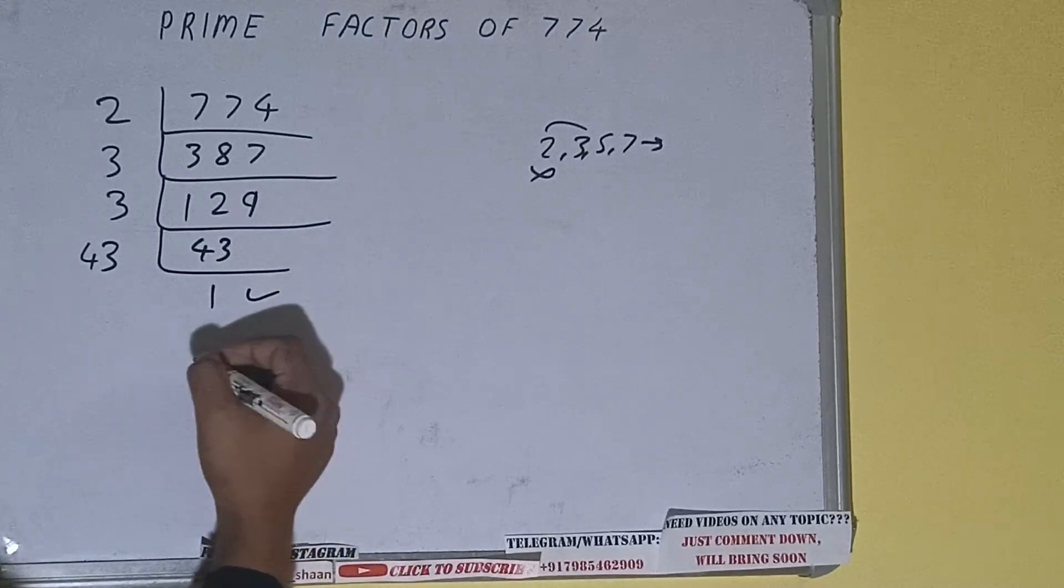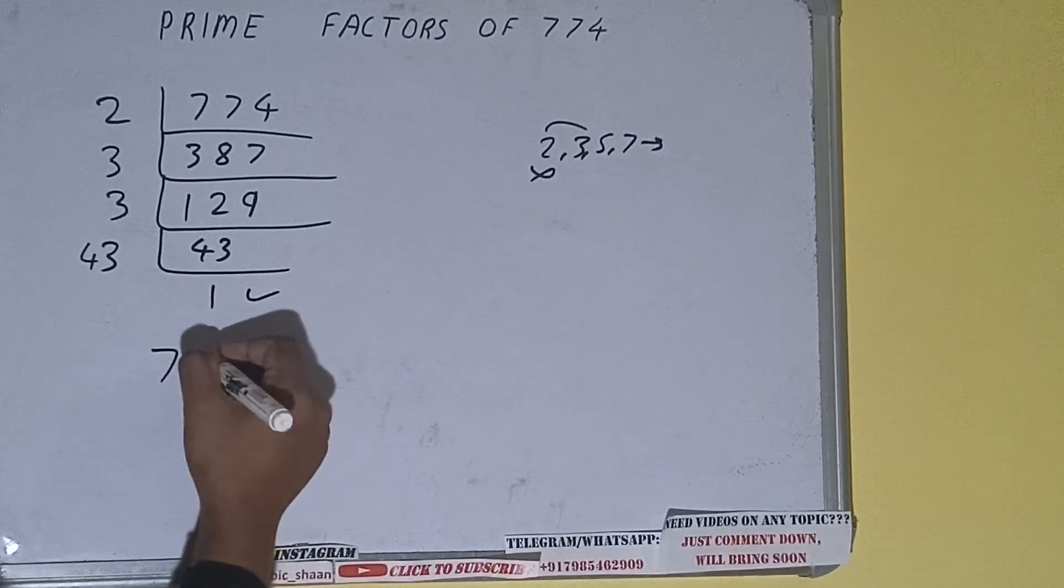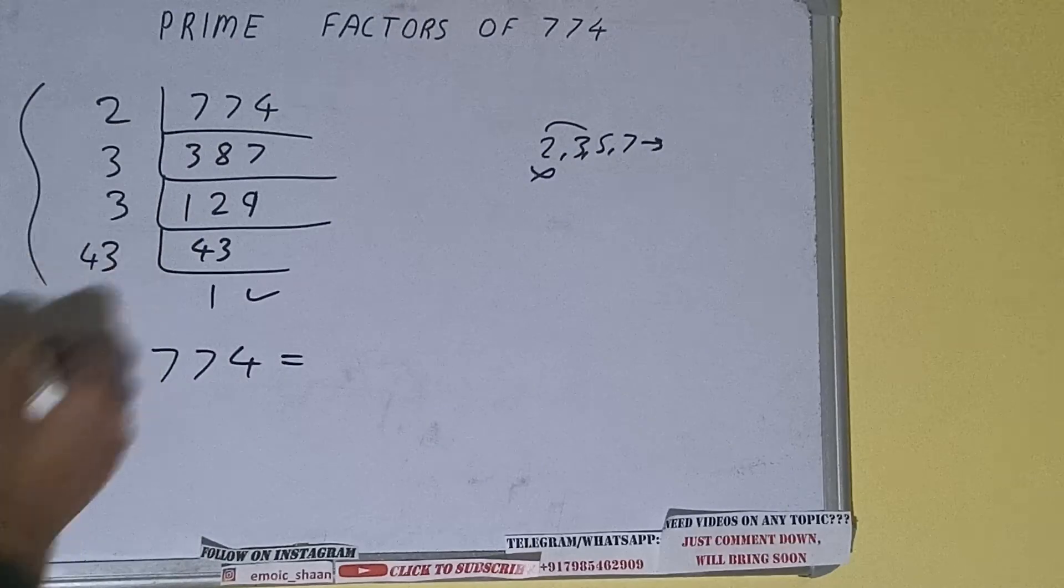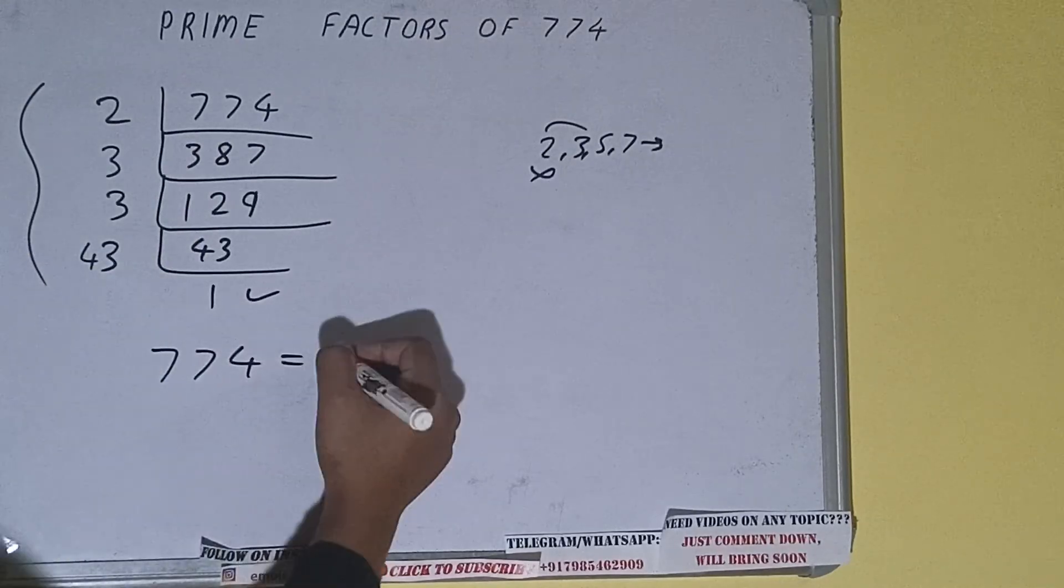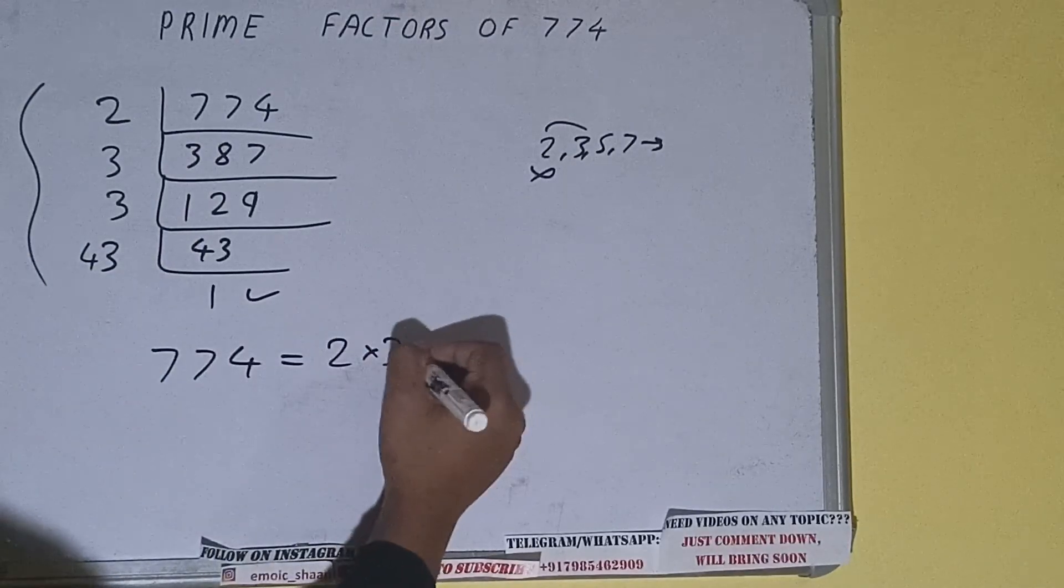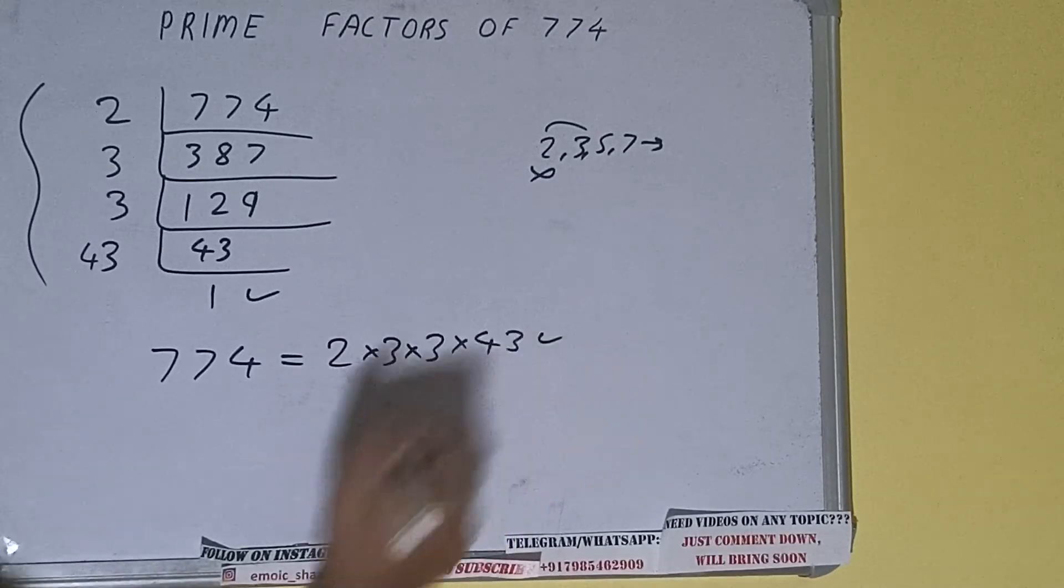Once we get 1, we need to stop and do one last thing. That is, the prime factors of 774 equals multiplying whatever we have on the left-hand side, that is 2 × 3 × 3 × 43. That will be the answer.